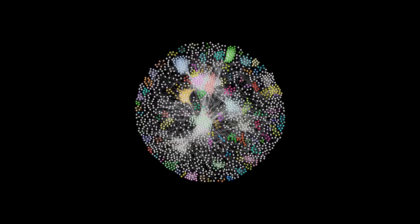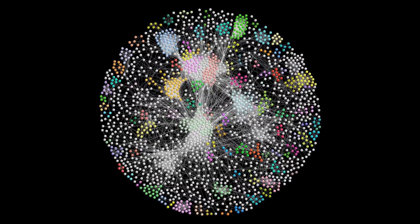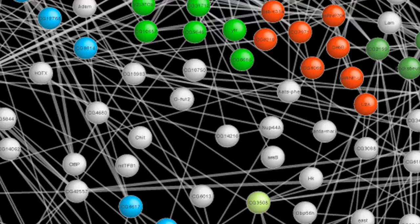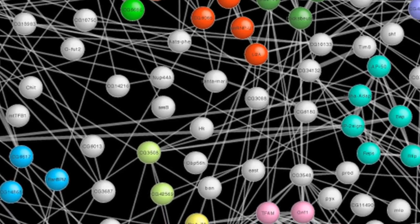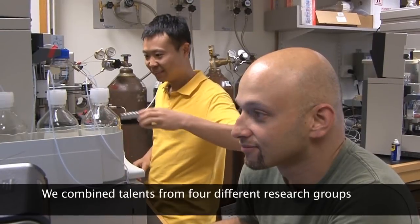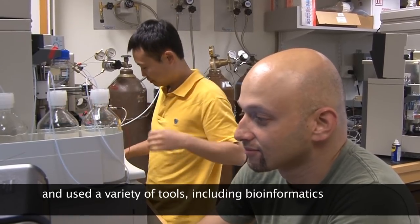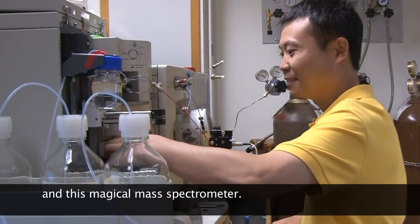In this particular diagram, we show how roughly 5,000 different proteins communicate. This is the largest and most detailed protein interaction map to date of a multicellular organism. Creating it took a tremendous amount of effort from many scientists. We combined talents from four different research groups and used a variety of tools, including bioinformatics and a mass spectrometer.